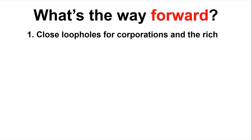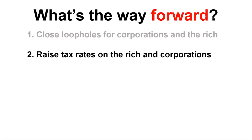Another strategy is raising tax rates on the rich and corporations. There's a lot of room to work here, given that we have an upside-down tax system asking proportionally more of the poor than the rich. One option is a millionaire's tax — setting a new, higher tax rate on Oregonians with income above $1 million or $500,000. Polls consistently show that a very solid majority of Oregonians and Americans think the rich and corporations are not paying their fair share, so politically this can be viable as well.